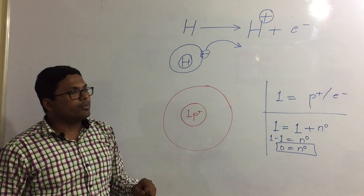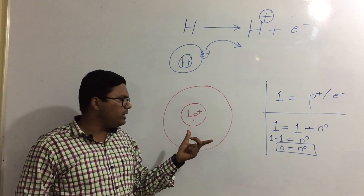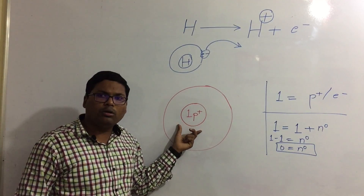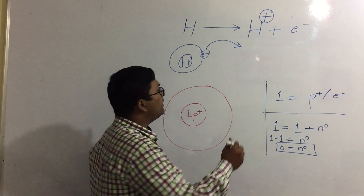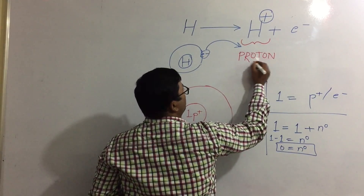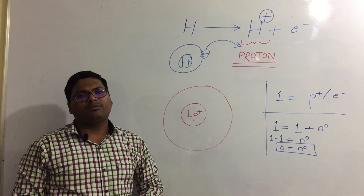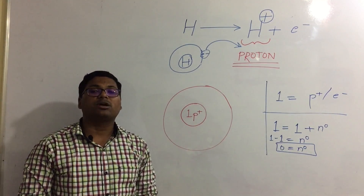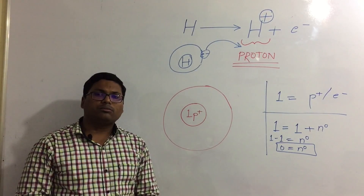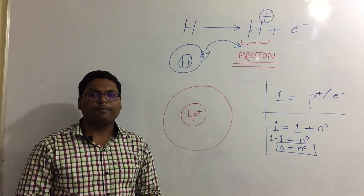So now you understand why the hydrogen ion is called a proton: only the atomic nucleus is left, and in hydrogen, the atomic nucleus contains only a single proton. That is why our hydrogen ion is called a proton. I think you must have understood the question we started with. Thanks for watching, and if you would like to see more videos from our channel, kindly like and subscribe. Thanks a lot.